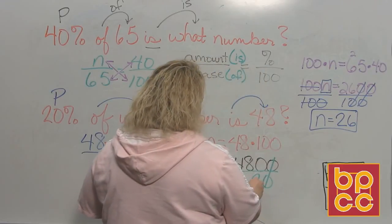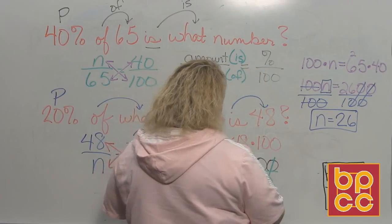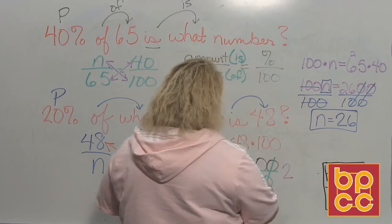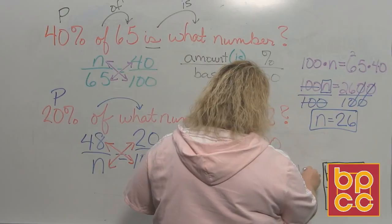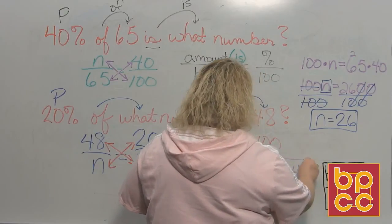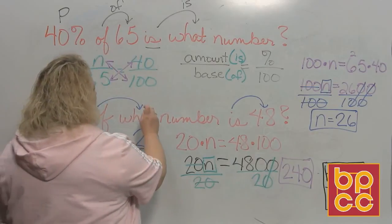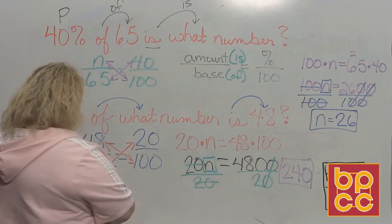And so I'm just dividing two into 480. Well, two divides into four twice, two divides into eight four times, and then two divides into zero zero times. So n is 240. So 20% of 240 is 48.